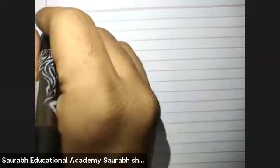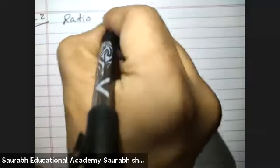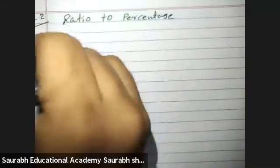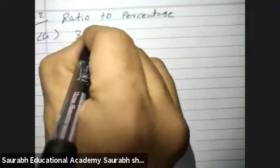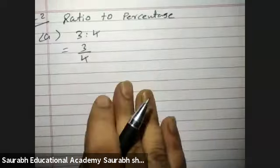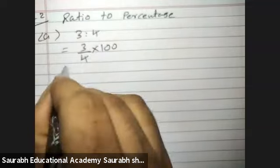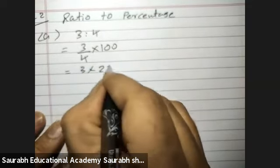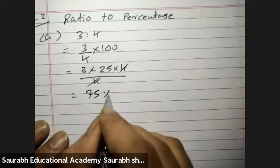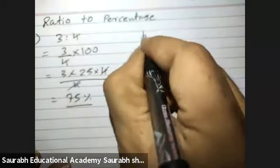Now sum number 2, convert ratio to percentage. First question, 3 is to 4. Now if you wish to convert to percentage, you have to multiply with 100. So 100 is 25 forza upon 4. 4 for cut, answer is 75%.